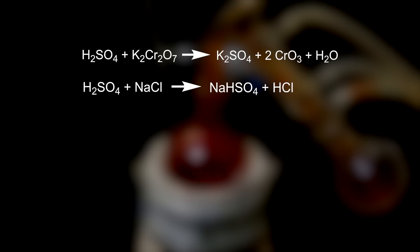What is happening are three different reactions. At first, concentrated sulfuric acid reacts with potassium dichromate, to form potassium sulfate, chromium trioxide, and water. Concentrated sulfuric acid also reacts with sodium chloride, to form sodium hydrogen sulfate, and hydrogen chloride. Chromium trioxide and hydrogen chloride then react, to form chromochloride, and water.